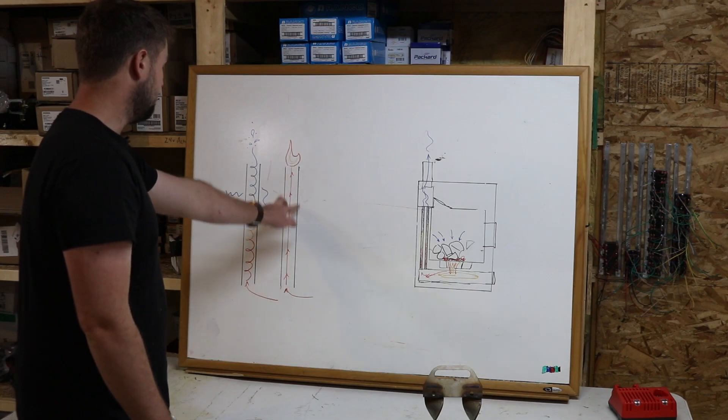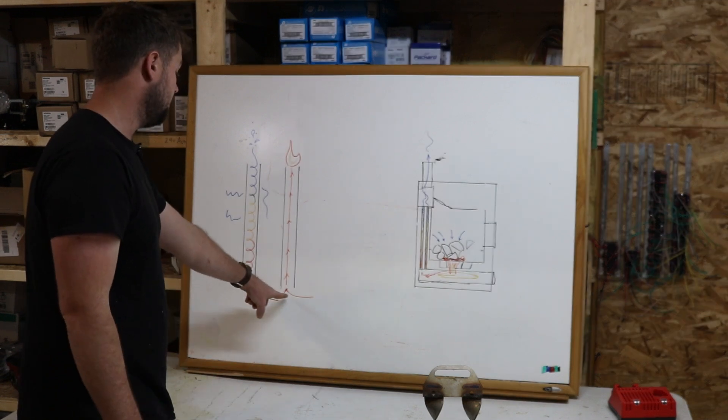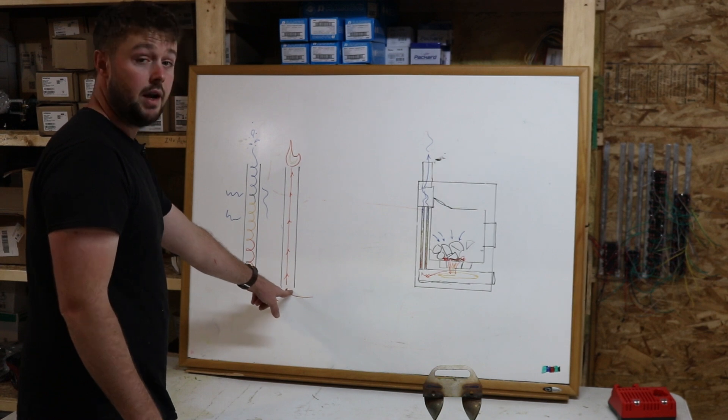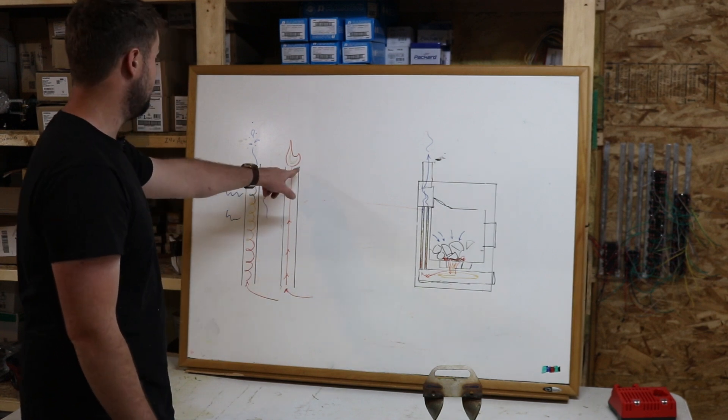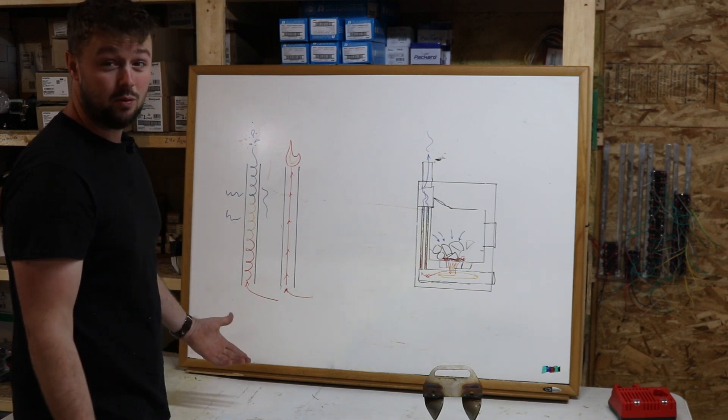This is what it would be like if the exhaust tube didn't have anything in it and it was just a straight shot. You have about 1,500 degree air going in here and you would have about 1,300 degree air coming out here. That's not going to work.